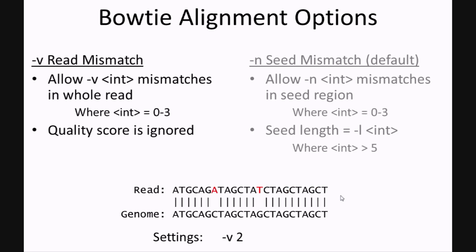The other alignment option in Bowtie is -v, which controls how many mismatches to allow across the entire read. This can be set from 0 to 3. Using -v may be more suitable in cases where read quality is relatively high across the entire read, as Bowtie will ignore quality scores when using this option.